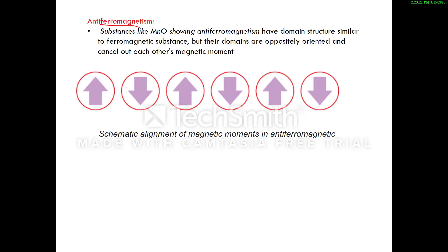Anti-ferromagnetic substances, like MnO, have a domain structure similar to ferromagnetic substances, but the domains are oppositely oriented and cancel out each other's magnetic moment. As shown in the diagram, some domains point upward and others point downward in equal and opposite arrangement, so they cancel each other out. MnO is the classic example of an anti-ferromagnetic substance.